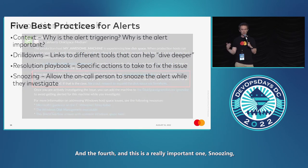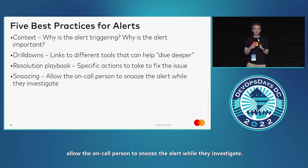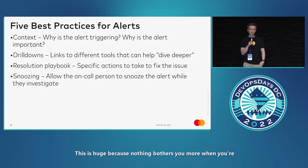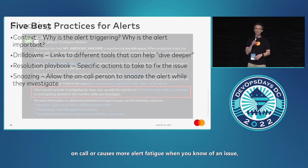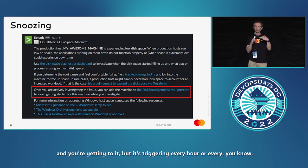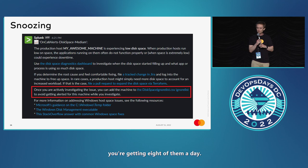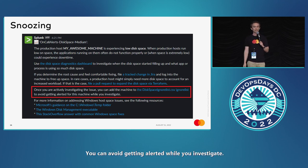The fourth best practice — and this is a really important one — is snoozing: allow the on-call person to snooze the alert while they investigate. Nothing causes more alert fatigue than knowing about an issue and actively working on it but still getting triggered every hour or eight times a day. Here's a link to an ignore list so you can avoid being alerted while you investigate.